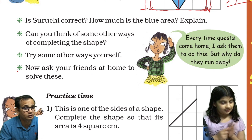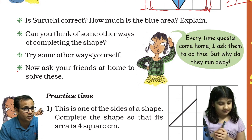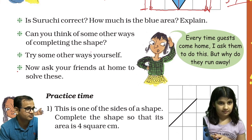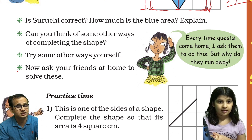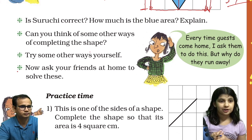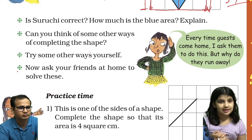Can you think of some other ways of completing the shape? Yes, of course — you can think of and make different ways of doing that. But the key question is: is Suruchi correct? How much is the blue area?